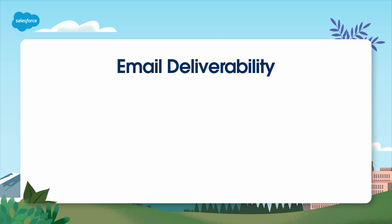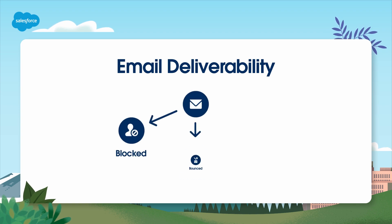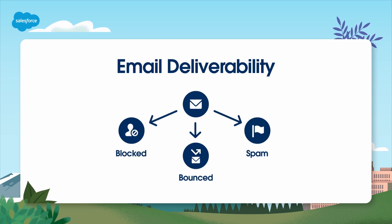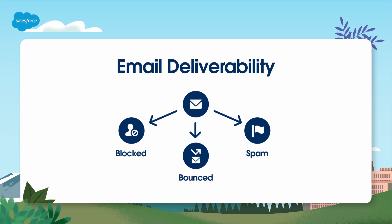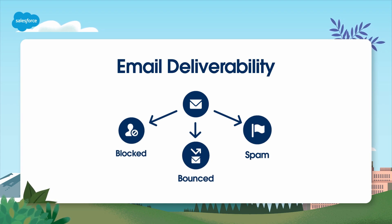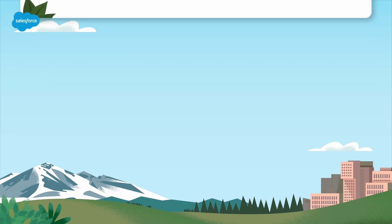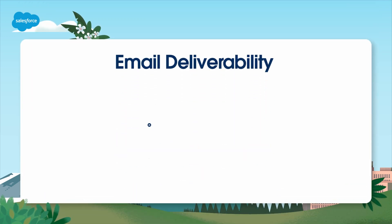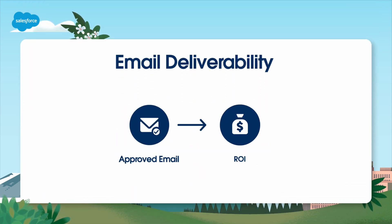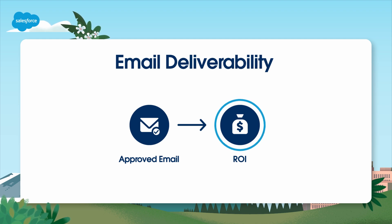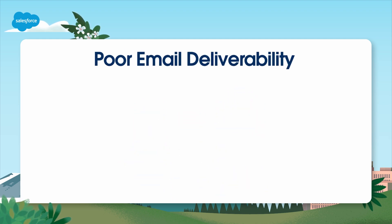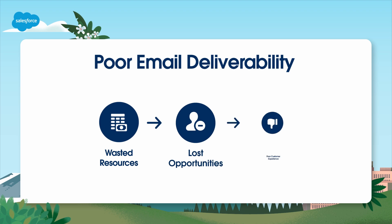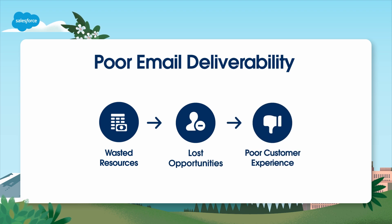Email deliverability is an umbrella term for many factors involved in successfully getting your email to inboxes. It's about following best practices to keep your emails from being blocked, bounced, or flagged as spam. Good email deliverability is vital for the success of your email campaigns. It directly affects your return on investment, or ROI. Poor deliverability leads to wasted resources, lost opportunities and poor customer experiences.